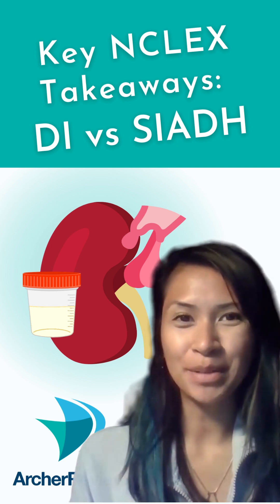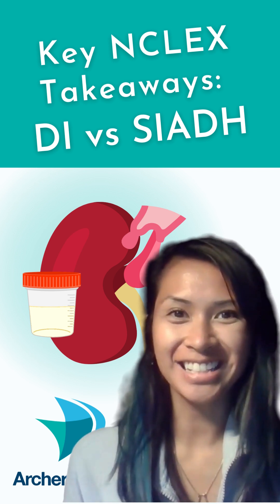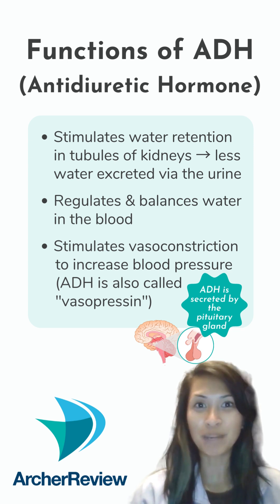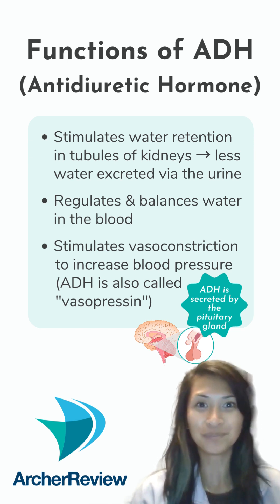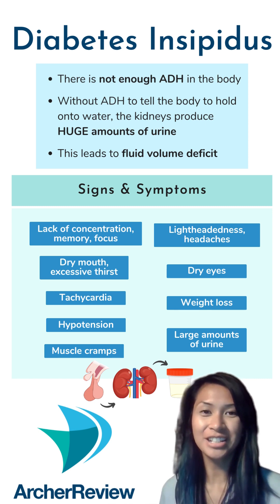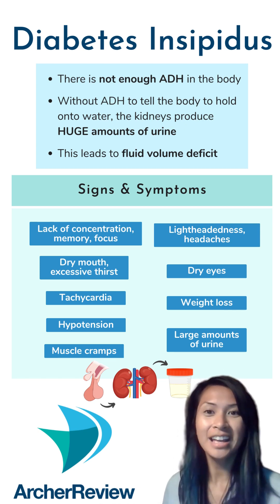Here's your weekly wrap-up comparing DI and SIADH. ADH causes antidiuresis, so when it's secreted by the pituitary gland, our patient will retain water. When the pituitary gland doesn't secrete enough ADH, our patients can develop diabetes insipidus, or DI.